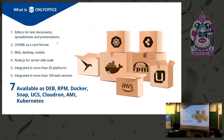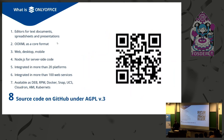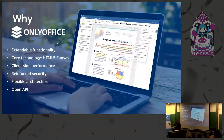ONLYOFFICE is available as different packages — Docker container, Snap, Univention Server, cloud drone, Amazon image, and many others. Of course, our source code is also available on GitHub.